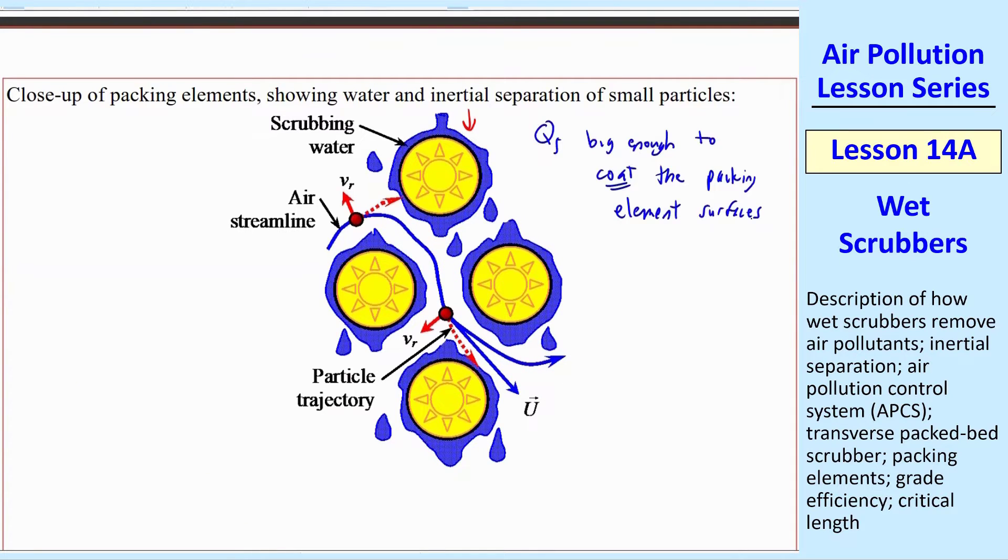QS must be big enough to coat the packing element surfaces. You don't want to flood this thing because you have to have enough room for the air to go through. But you want all the elements coated with water. The result is it uses much less water than a spray tower, and it's usually more compact. More compact typically means less expensive as well.